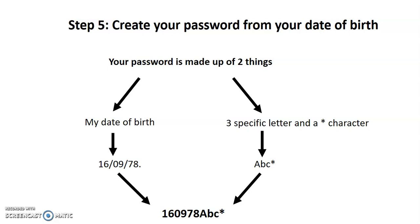So in this example, using the 16th of the 9th, 1978, I write down 1-6-0-9-7-8. Here's the important part you should remember: the next characters are a capital A, a lowercase b, a lowercase c, and then an asterisk. You can find the asterisk above the number 8 on your keyboard.